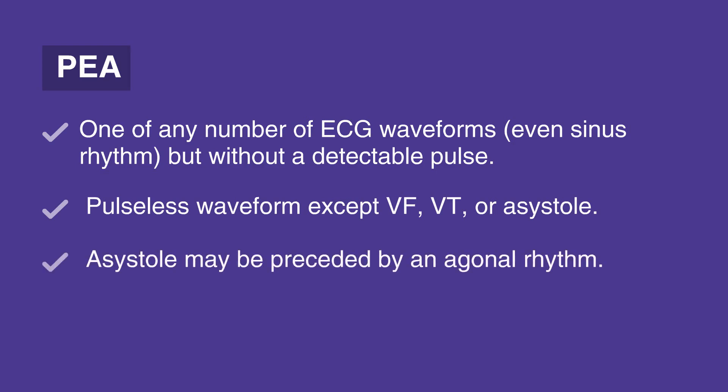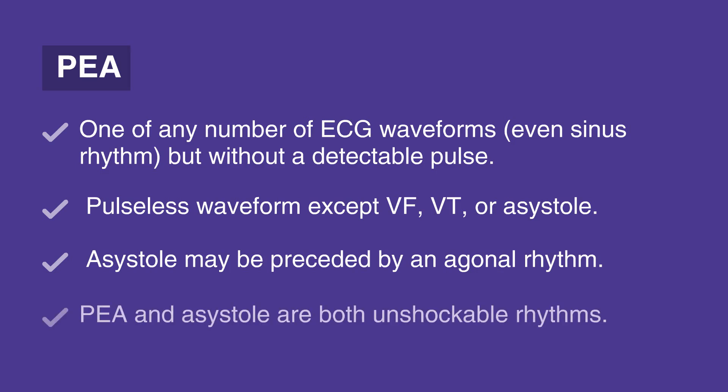Asystole may be preceded by an agonal rhythm. An agonal rhythm is a waveform that is roughly similar to a normal waveform, but occurs intermittently, slowly, and without a pulse.